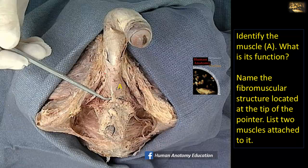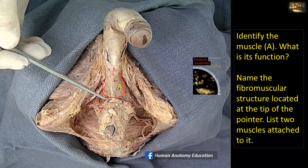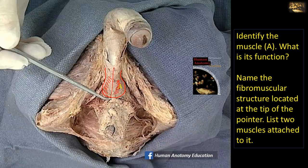This is a dissection of the superficial perineal pouch of a male. The muscle here is covering the bulb of the penis — this is the region of the bulb. It is actually two muscles having a midline raphe, and this is the bulbospongiosus muscle. The bulbospongiosus, as well as the ischiocavernosus, both contribute to erection. But the bulbospongiosus has a special function: it contracts the bulb, which contains the urethra, so that it can expel the last drops of urine or semen.